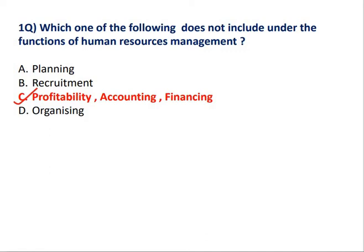तो Question में अगर कुछ भी option हो — Profitability हो, Accounting हो, Financing हो — और अगर यह Human Resource Function नहीं पूछ रहा है, कौन सा इसमें से Human Resource Management का Function नहीं है, तो आप इसमें यह Option C लगाएंगे.